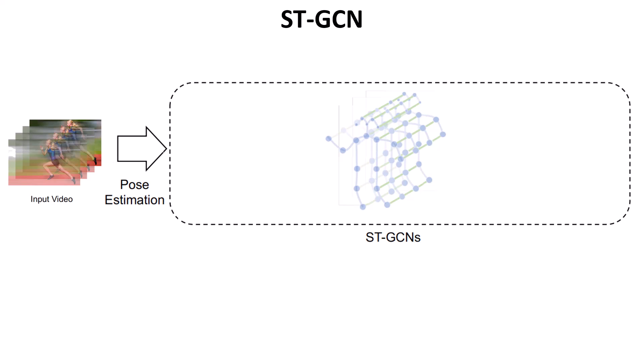When we look at the middle representation of skeleton sequences in the STGCN neural network, we can ask: what is the receptive field of a given node? If I focus on a single joint in a single frame, and look at the representation of the sequence in the previous layer — we know from graph convolutional networks what happens. We have this joint highlighted in green, which is the same joint in the previous layer.